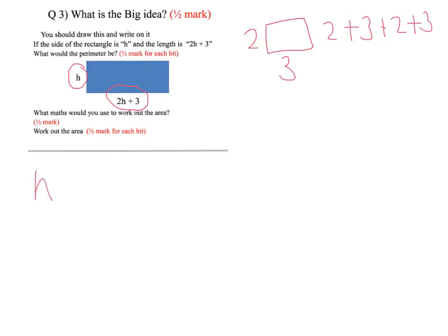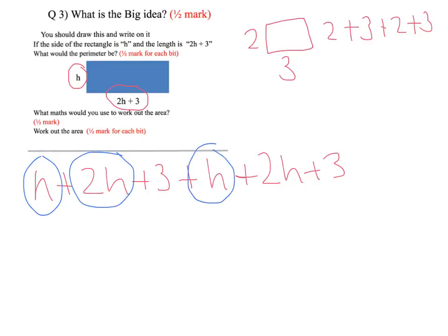So what works with number works with algebra. We've got to do h plus 2 plus h plus 3 plus h plus 2 plus h plus 3. Remember there are four lengths to add together if we were to walk around it. So h plus 2h plus h plus 2h. So we've got to do a bit of simplifying.